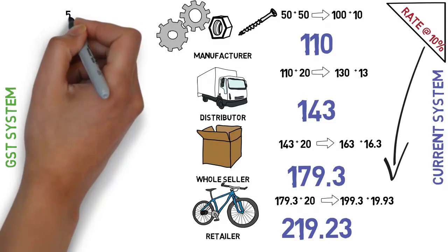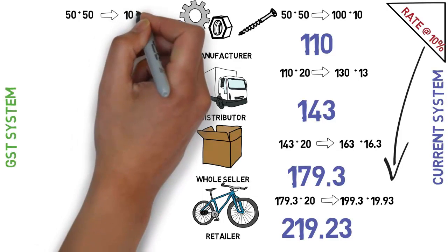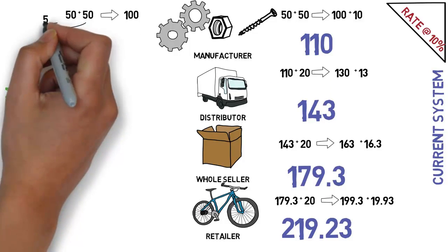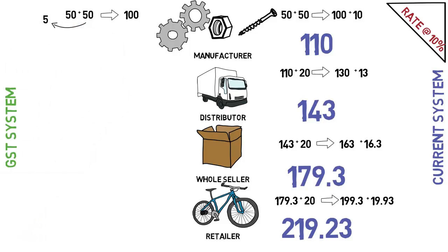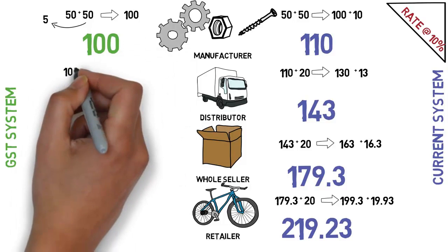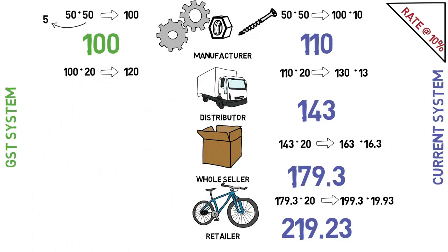Now we will take the same example under the GST system. Raw material of 50 rupees plus manufacturing value of 50 rupees makes the product 100 rupees. But this time the manufacturer has to pay taxes only on the value added by him, which is 50 rupees. So he pays 10% of 50, which is 5 rupees. The selling price remains 100 rupees. The distributor adds 20 rupees profit, making the product 120 rupees, and pays tax of 2 rupees on his profit of 20 rupees.